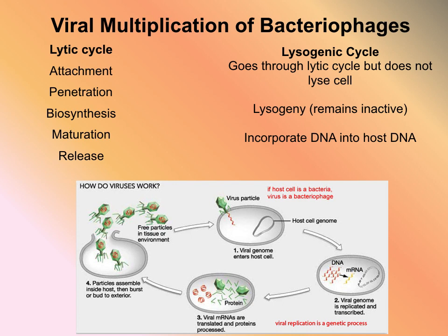We move to the next step: maturation. In maturation, the bacteriophage particles are all being assembled — phage DNA is inserted into the capsid, the sheath and tail fibers, pins and base plate, all the different parts are assembled into finalized mature phages. Eventually we move to the last step, release. The bacteriophage encodes for lysozymes, which weaken the cell wall to the point that it bursts open — hence the name lytic cycle. New mature bacteriophages exit the cell to infect new cells.